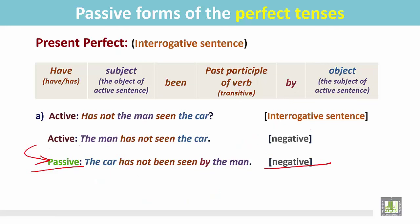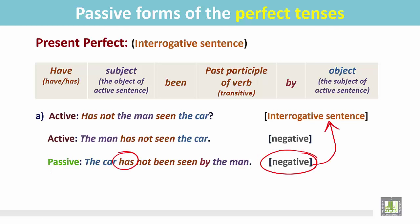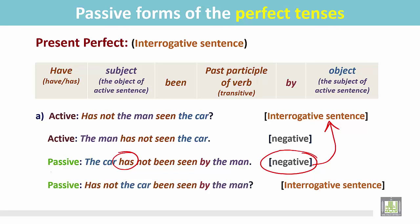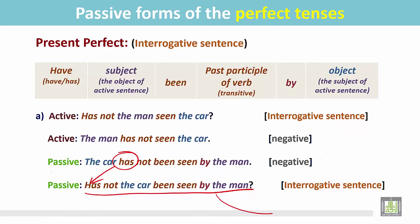It is still in the negative as a statement. Now change this statement into an interrogative sentence. Place the helping verb — the verb 'to have' — at the beginning of the sentence. 'Has not the car been seen by the man?' And it has been changed into an interrogative sentence in the passive form.